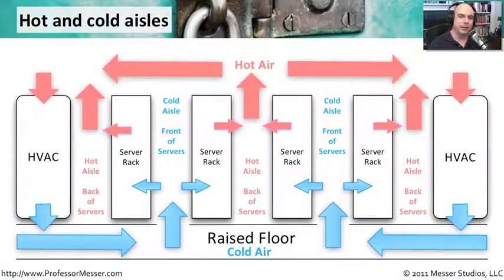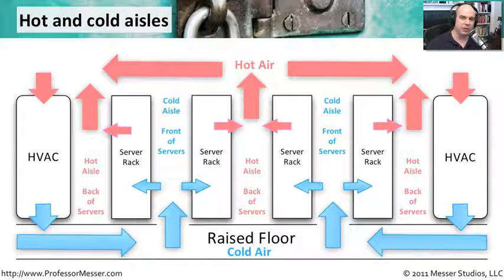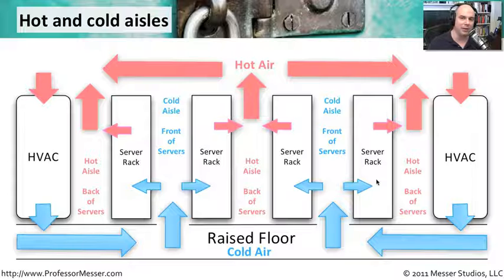When we talk about hot aisles and cold aisles, we're talking about the way that we're engineering our data centers — where we're putting our servers, which rack, and what direction in the rack we're putting our servers. If we think about the cooling system in a data center, we've got these HVAC units. This is a side view of all of the racks, and if we go down this aisle and look left or right, we would see the front or the back of servers facing us.